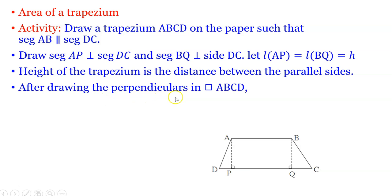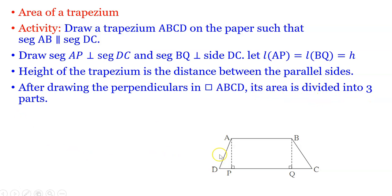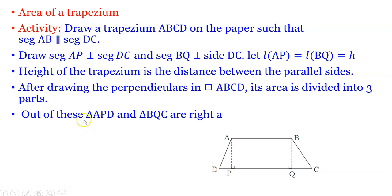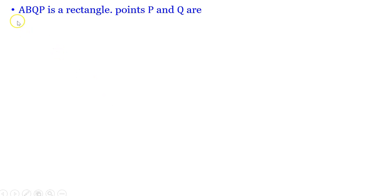After drawing the perpendiculars in quadrilateral ABCD, its area is divided into three parts: triangle APD, quadrilateral ABQP, and right angle triangle BQC. Triangle APD and triangle BQC are right-angled triangles, and quadrilateral ABQP is a rectangle.